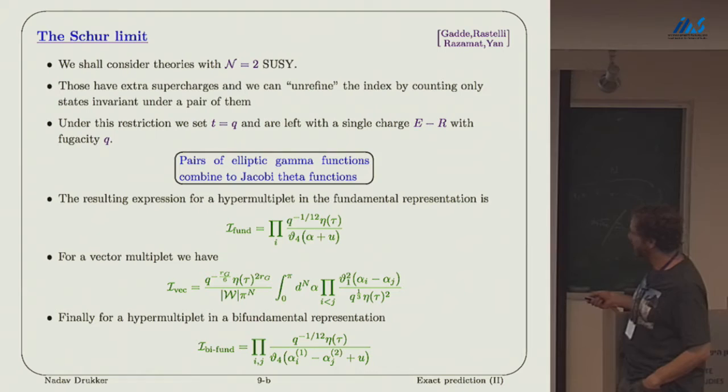The Q Pochhammer symbols become eta functions, the theta functions become theta 2, theta 1. Tau is essentially log Q. These are the contributions of the fundamental field, which will not play any role. I have a vector field, which has this integral over these parameters alpha. For a bi-fundamental field charged under two gauge fields alpha 1 and alpha 2, I get this kind of contribution, product over all i and j, 1 over theta 4 of alpha i minus alpha j.